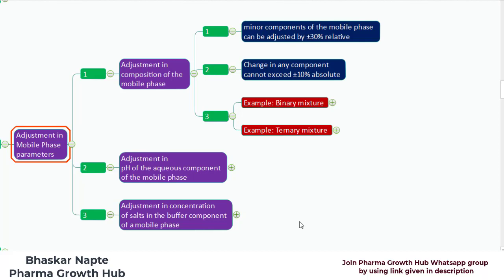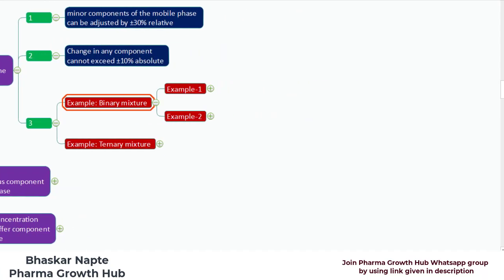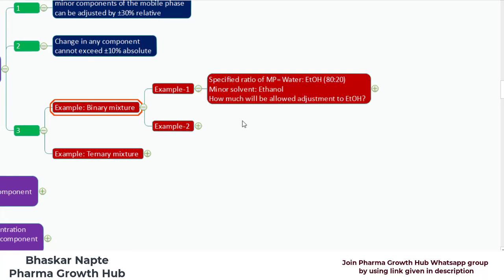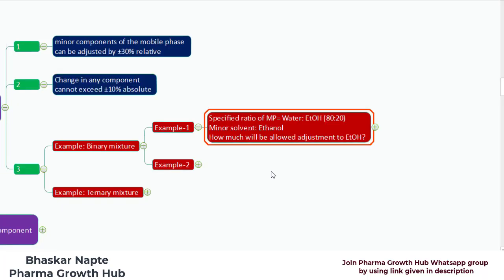Now let us talk about the examples. We will first discuss the binary composition or binary mixture, and I am going to explain how the mobile phase composition can be changed in case of a binary mixture. Here is example number 1. Let us assume you have a mobile phase with water to ethanol at 80:20. The minor solvent in this case is ethanol because it consists of the 20 parts of the mobile phase. The question here is: how much adjustment will be allowed to the ethanol content?